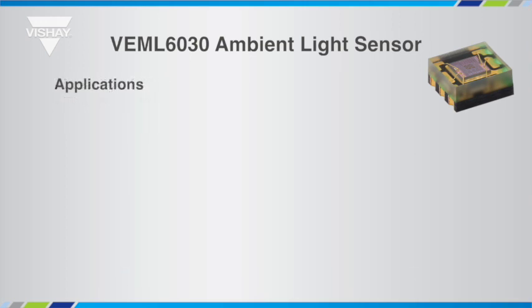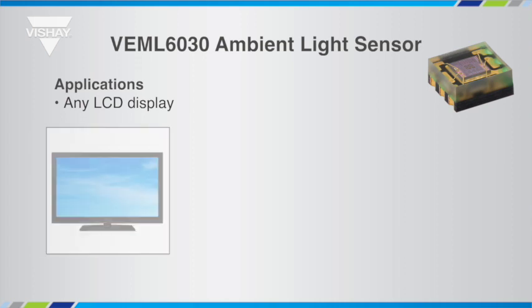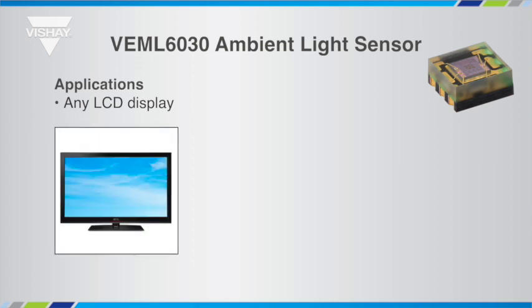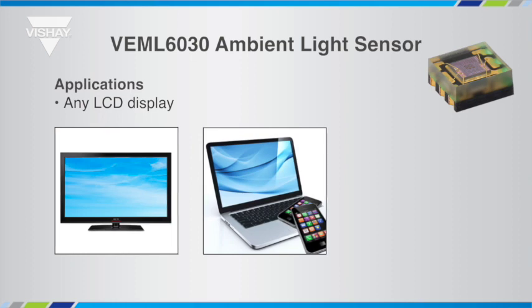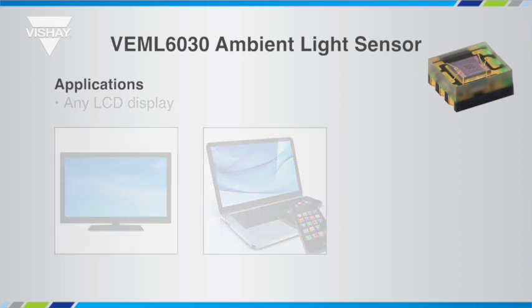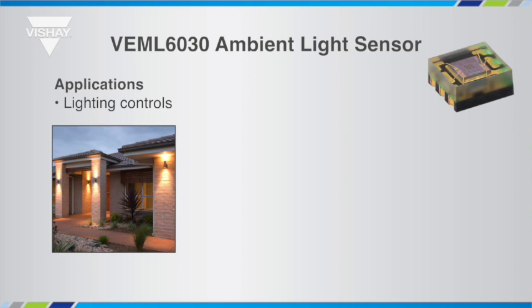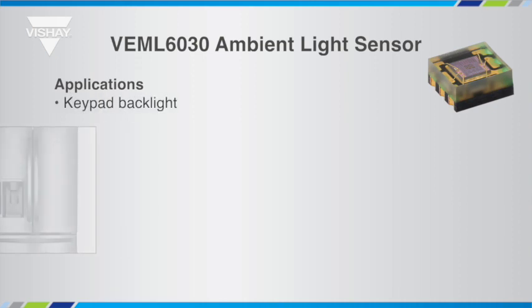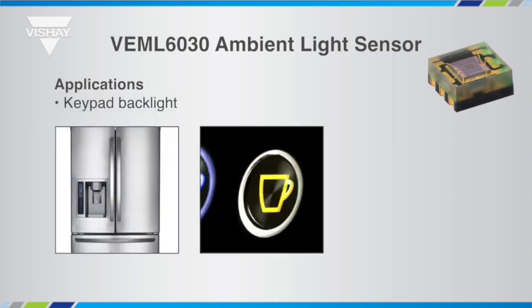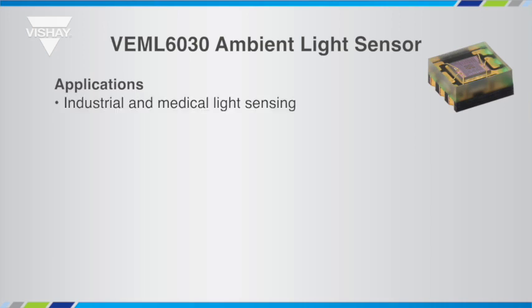The VEML6030 can be used to adjust the backlight of any LCD display — TVs, smartphones, notebook PCs, ATM machines, thermostats, clocks, any display. It will play a key role in automated lighting controls used to not only turn lights on or off but to control their intensity. It can also be used to control window blinds or shading. Any keypad backlight and indicator lights behind switches will have optimal brightness with the VEML6030.